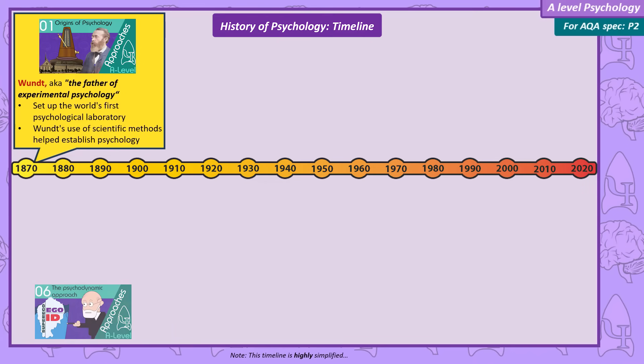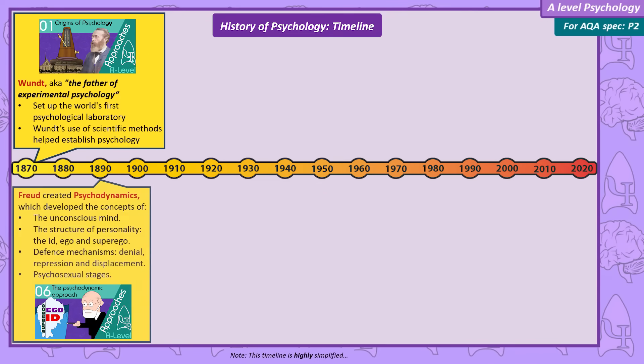A little later in the timeline we have Sigmund Freud, who developed an approach to understanding the mind called psychodynamics. This was less scientific than Wundt, as Freud based his ideas on case studies. Freud used introspection as part of his therapeutic work with individual patients, and from this work he developed the idea of an unconscious mind, arguing there are processes that direct our behaviour that we're totally unaware of. He defined the structure of personality, claimed we use defence mechanisms such as repression, denial, and displacement to cope with anxiety, and formed a theory of childhood development called the psychosexual stages.